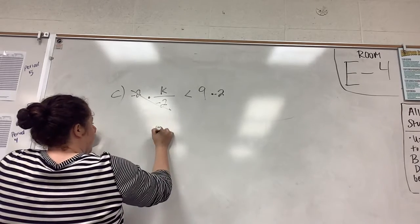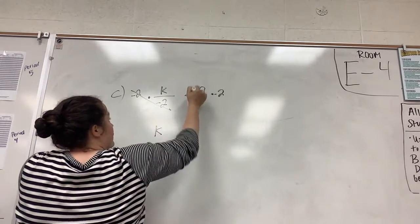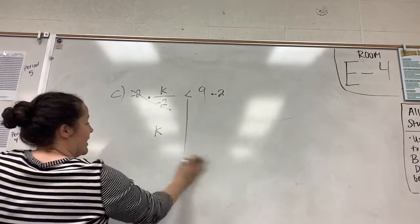And then the negative 2s will cancel. We'll be left with k on this side. We'll deal with the sign and the symbol in a minute.